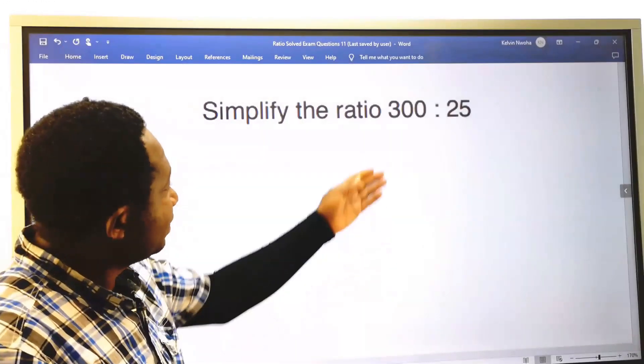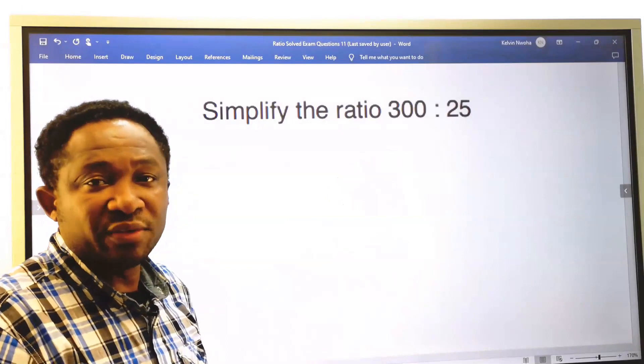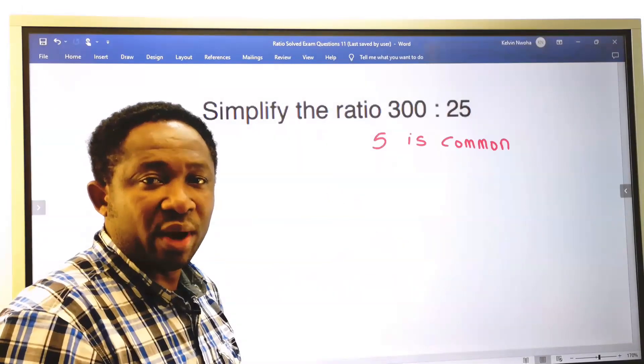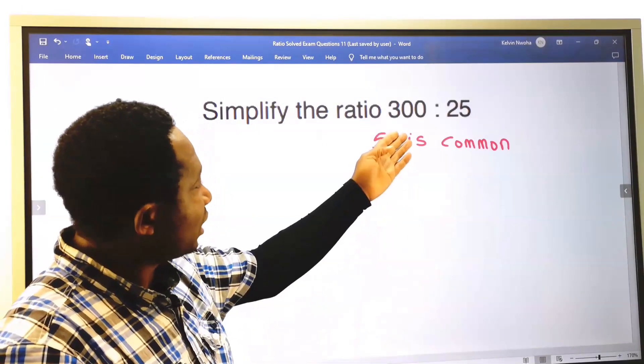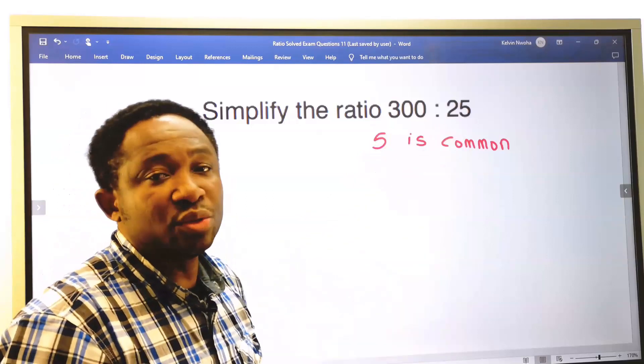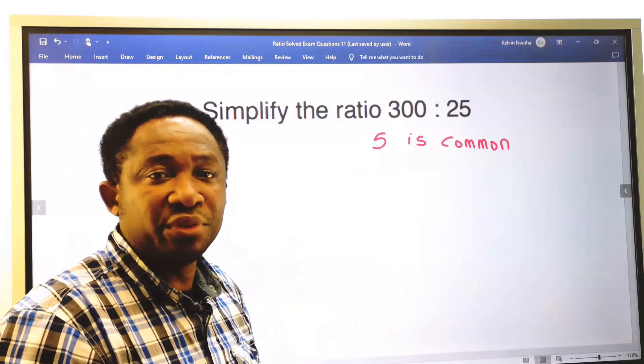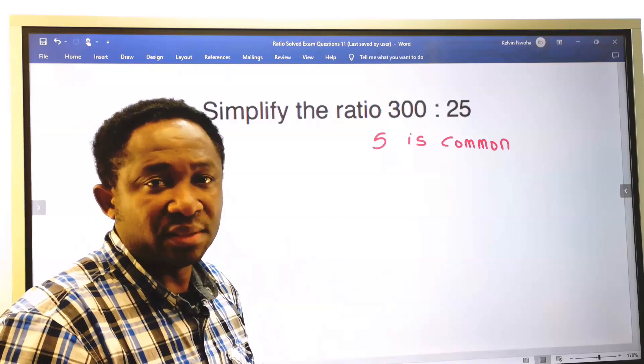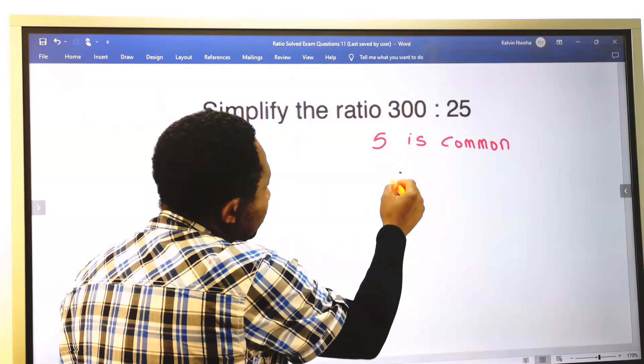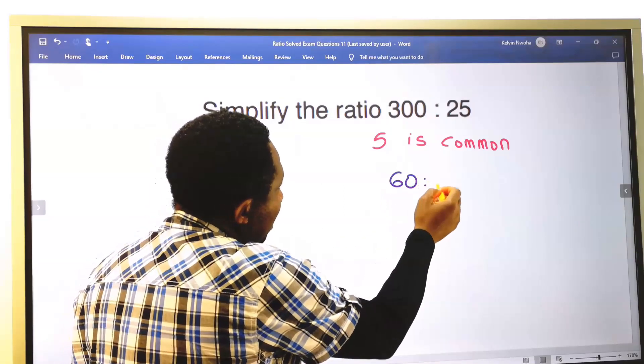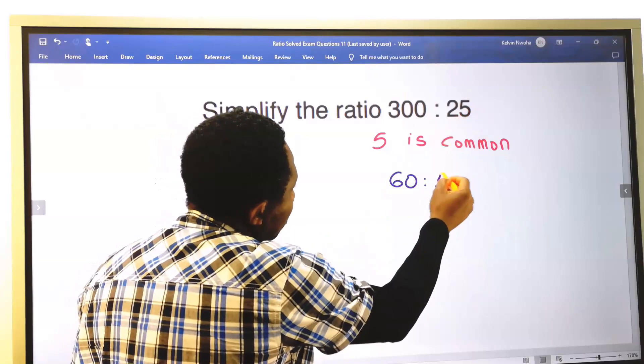Let's simplify 300 to ratio 25. Step number 1. 5 can go into 300 and also go into 25 and both will return whole numbers. 5 here will return 60, and 5 here will return 5.